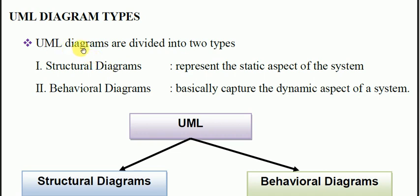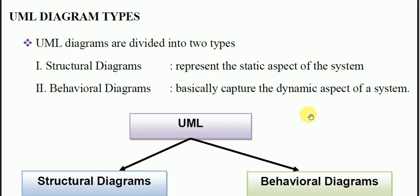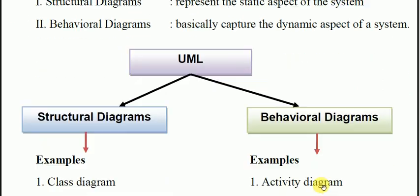We can divide the UML diagram into two categories. There are two kinds of UML diagrams: structural diagram and behavioral diagram. The behavioral diagram basically captures the dynamic aspects of the system. They are functional models and cover the dynamic aspects of the system. One is your structure diagram and the other is your behavioral diagram.